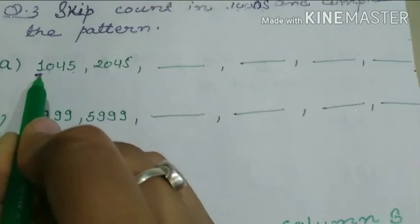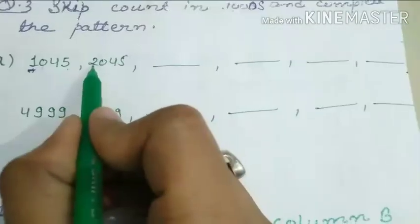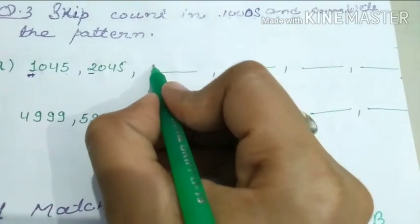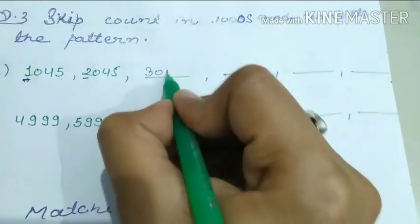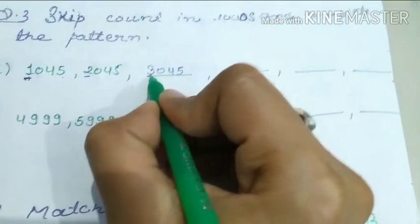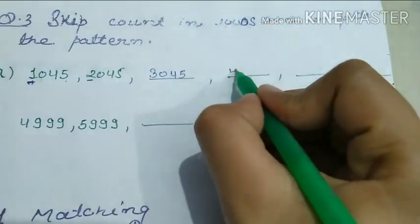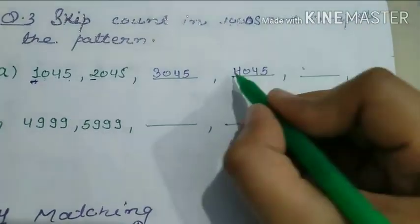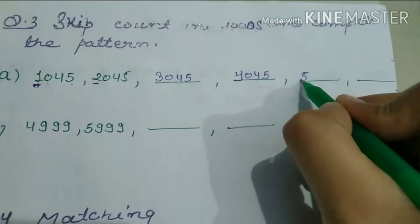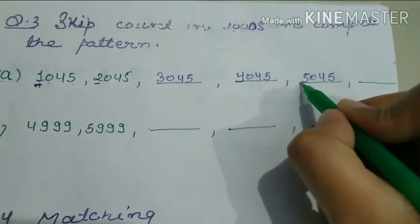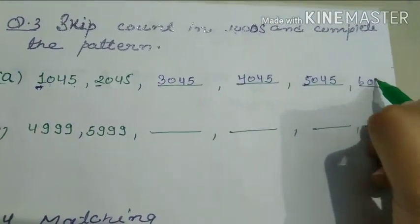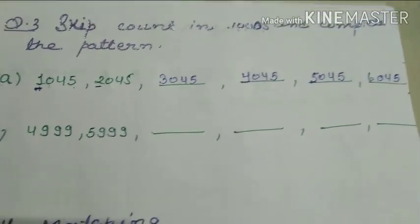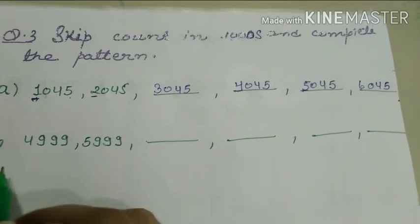Starting with 1 at the 1000th place, then 2, then 3, then 4, then 5, then 6. Only the thousands digit changes while hundreds, tens, and ones stay the same. This is the way to skip count in thousands.